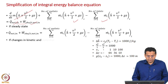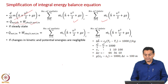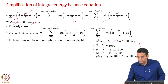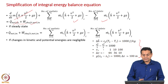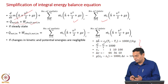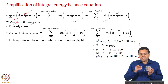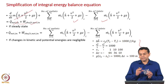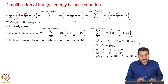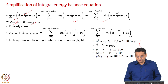We will make a few more assumptions and simplify further: if changes in kinetic and potential energies are negligible compared to changes in enthalpy. For a control volume with one inlet and one outlet, we compare the change in enthalpy between inlet and outlet with changes in kinetic energy and potential energy. To justify this assumption, we have a small example.